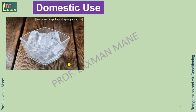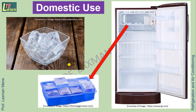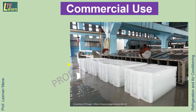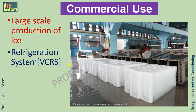For domestic purposes, we get ice cubes from a refrigerator by keeping water in an ice tray for approximately 6 hours in the freezer. For commercial purposes, to produce ice on a large scale, a mechanical refrigeration system is used, called an ice plant.